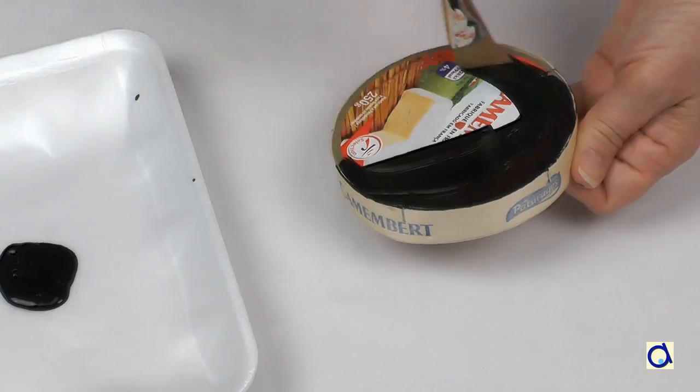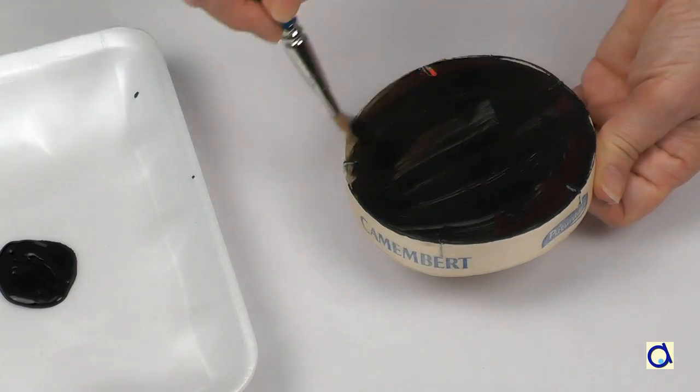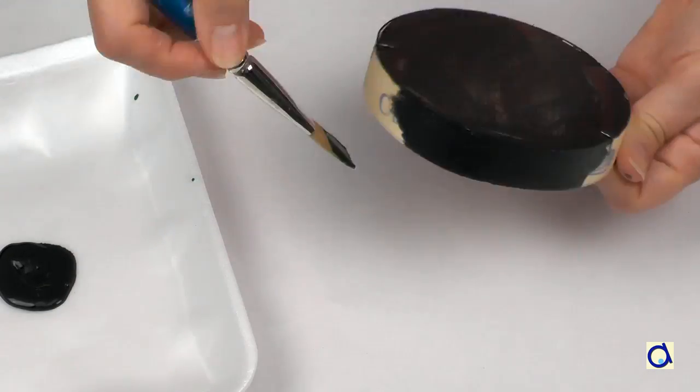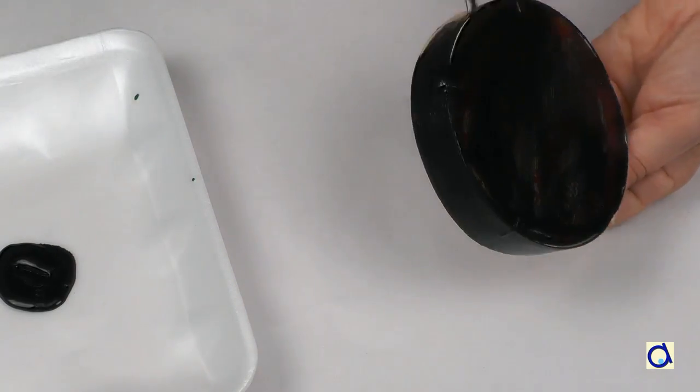Paint the flat top and the side of the egg carton in black. If necessary, put a second coat of paint to completely hide the markings. Let the paint dry.